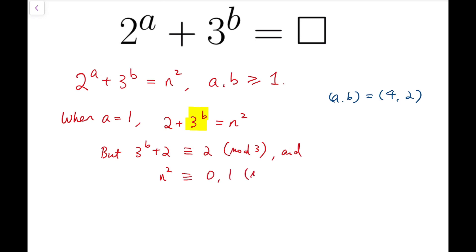But that's not possible because n squared, or in general a perfect square, can only be congruent to 0 or 1 mod 3. So that means we cannot have a solution.